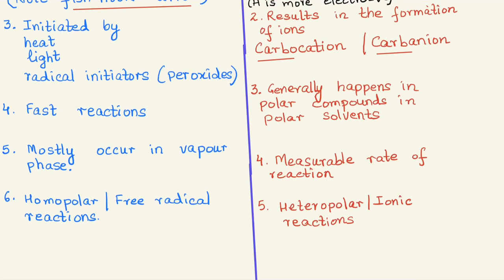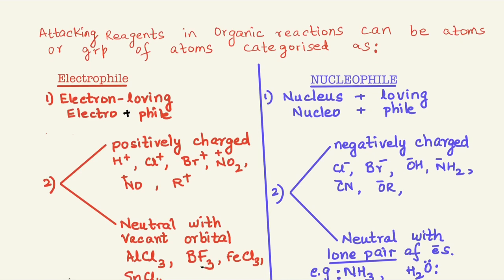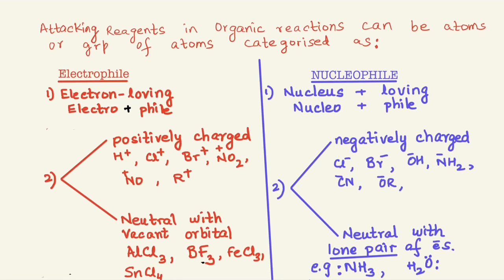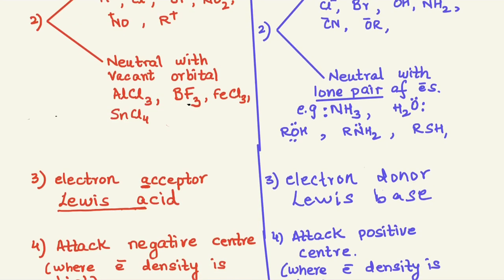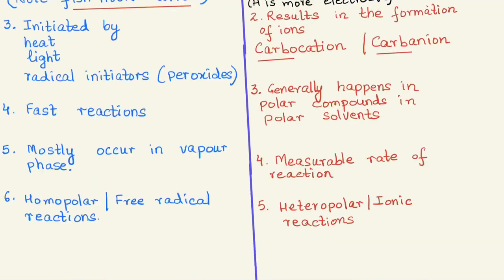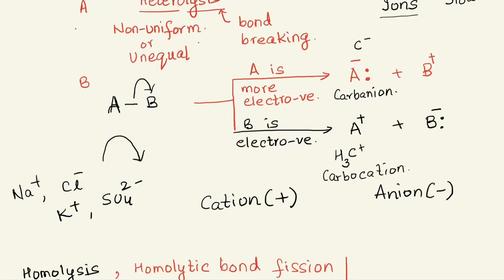In the case of heterolysis, two points are joined into one, so don't be confused — it's okay as long as you understand. We've already covered the types of intermediates, types of attacking reagents, electrophiles, and nucleophiles in a previous video, so in case you're confused please watch that video. Please do let me know your feedback if the sound quality is audible. Till we meet in the next video, stay safe, stay healthy, stay connected.